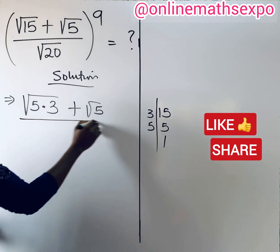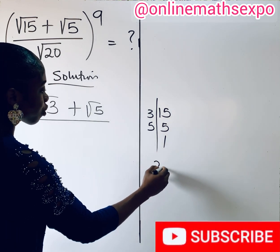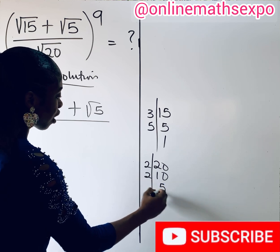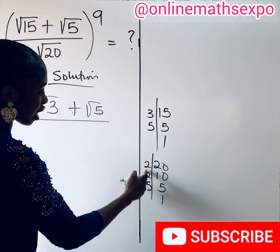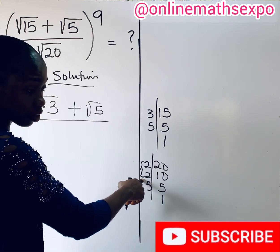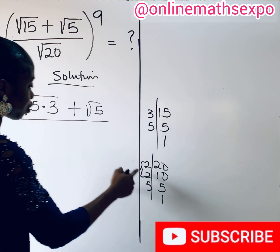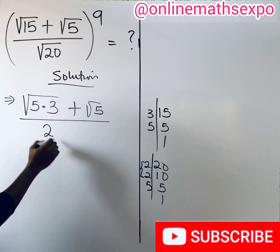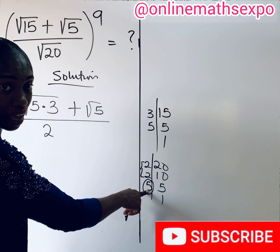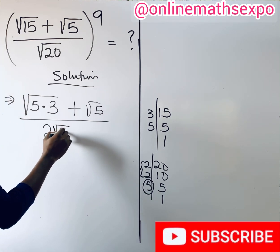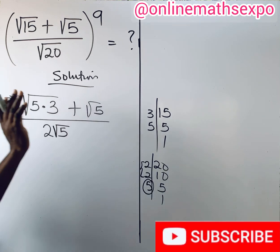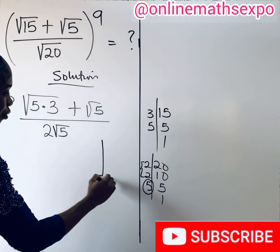Next, dividing by — we have 20: 1 goes into 2 giving 10, 2 goes into 10 giving 5, and 5 gives 1. You see that the 2 is repeated, so you pair it. When you pair, you take one out. The one you took out you write outside the root, and the remaining 5 stays inside the square root. So √20 simplifies to 2√5.